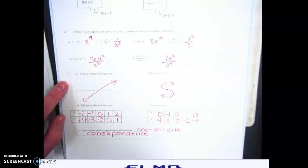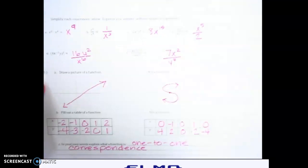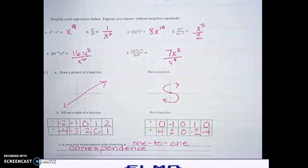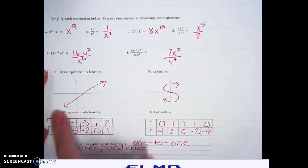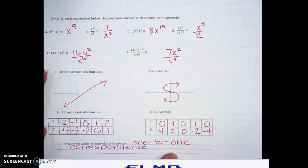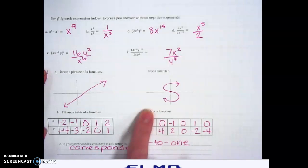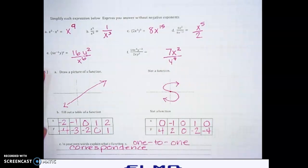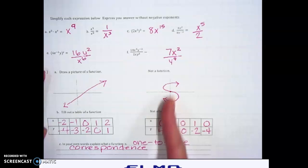Number 5, down at the bottom, they want you to draw a picture of a function, so I drew a line because I know for sure that's a function. And I just showed that it was increasing. It has a 1 to 1 correspondence, where something that's not a function is where you would have multiple points going through.